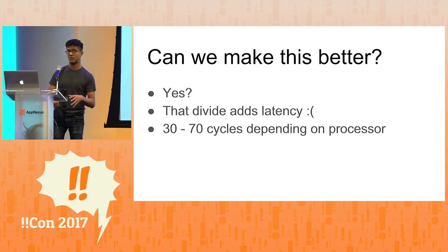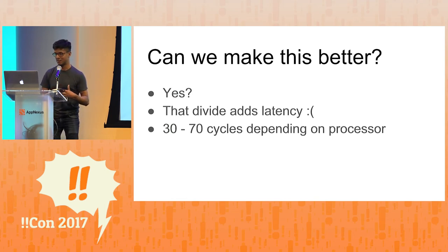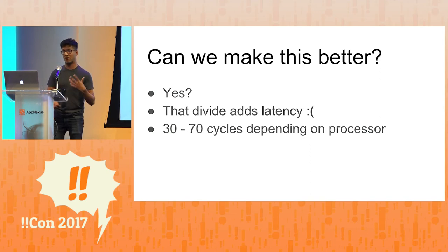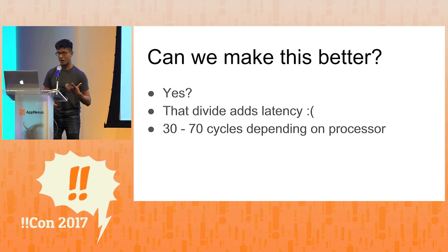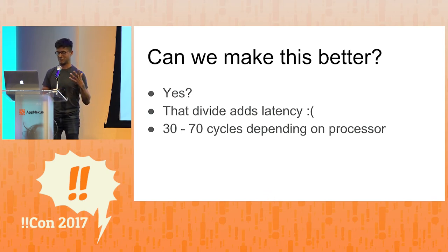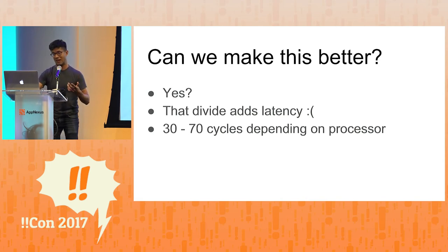This is where we leave the world of the paper and ask: can we make this better? When someone says something like that, I tentatively say yes — but then I think about what the bottlenecks are. Computers don't love to divide, and I don't blame them — I don't love to divide either. The divide adds latency; according to processors, it's like 30-something cycles — it's slow. So can we maybe not divide?